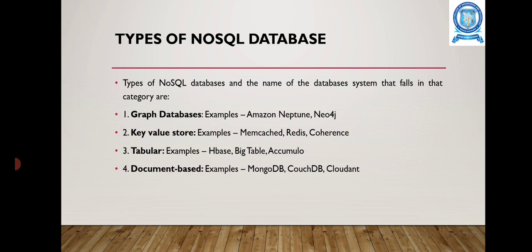The types of NoSQL databases and example names: for graph databases, examples include Amazon Neptune and Neo4j. For key-value stores, examples are Memcached, Redis, and Couchbase. For tabular or column family stores, examples include BigTable and Accumulo. For document-based databases, examples include MongoDB, CouchDB, and Cloudant.